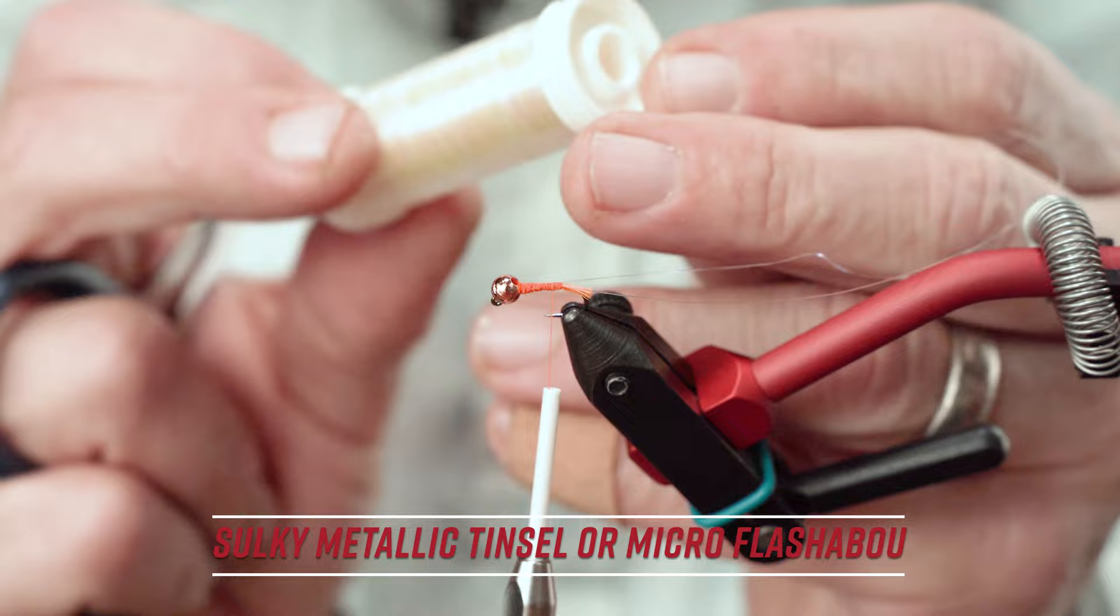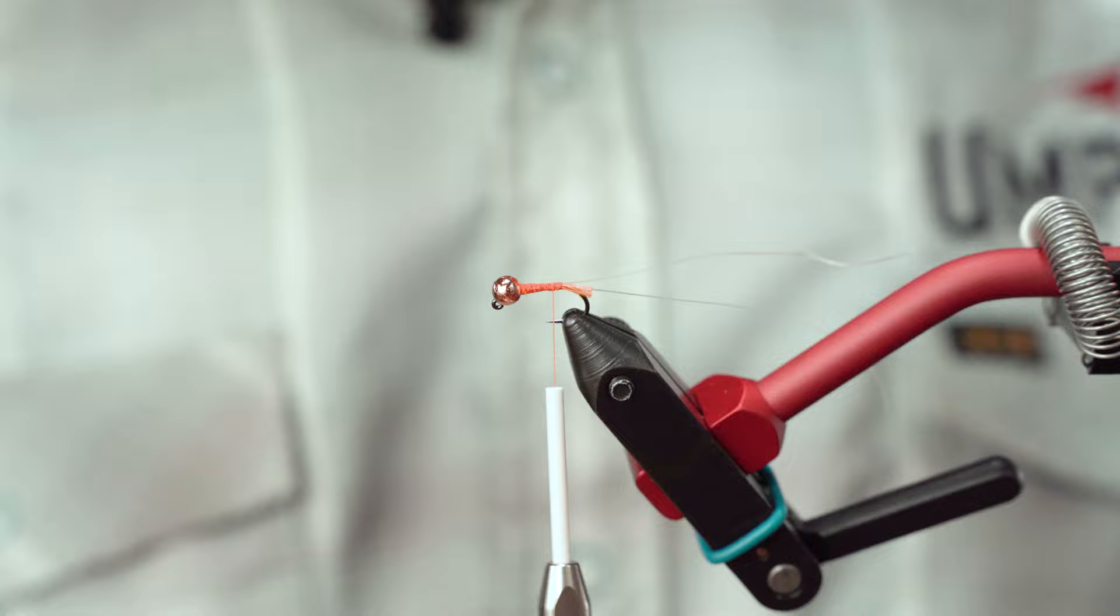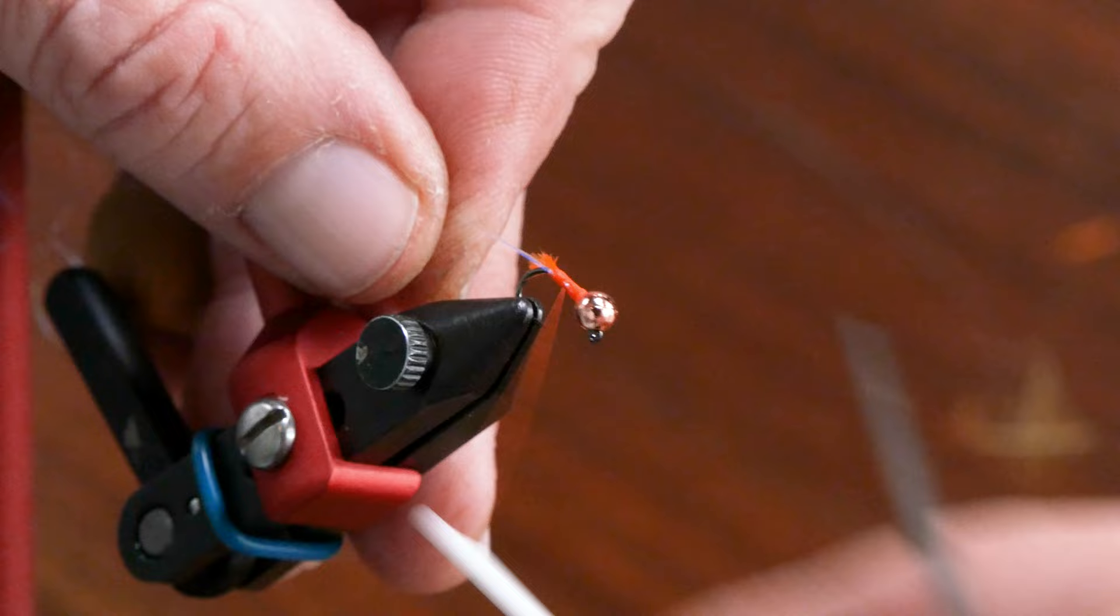Like, it's literally Sulky. But really good for going in bodies, really good ribs. But for the most part, Micro Flashaboo will do the trick. Flash is flash is flash. I can't stress that enough. So now we've got our two materials tied in opposite each other for durability purposes.